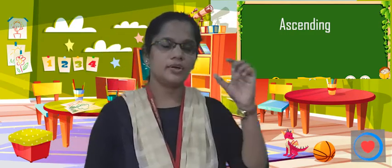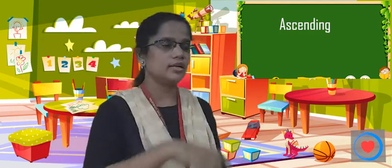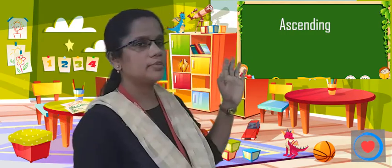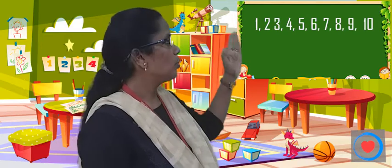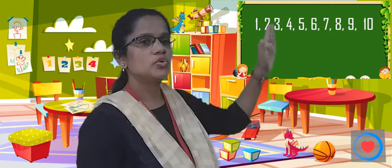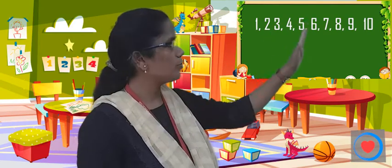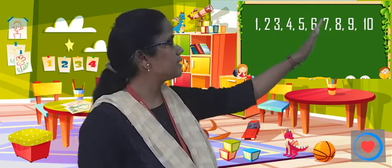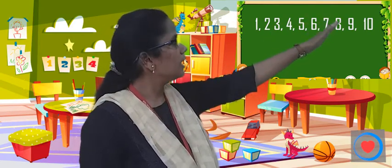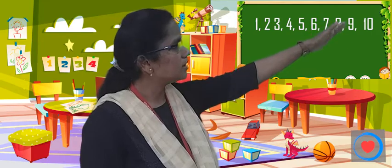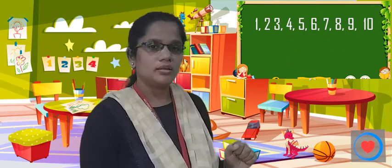Ascending order — what is it? Seedha. Okay? Seedha. Now, numbers — look at it: 1, 2, 3, 4, 5, 6, 7, 8, 9, 10. This is ascending order.